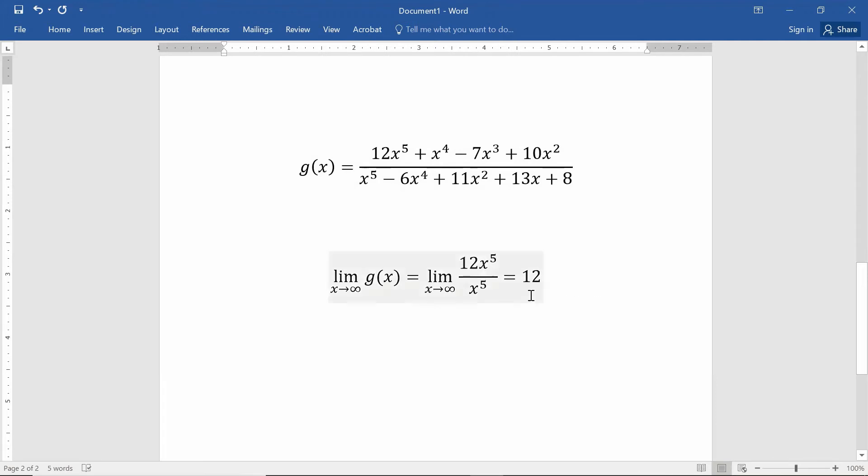By the way, notice that here I'm getting a positive 12, because if you think about plugging in big numbers into x to the fifth and x to the fifth, they're going to be the same, they're going to be positive. So this is going to be a positive 12 times a really big positive number, really big positive number on the bottom. So the positive numbers are going to cancel each other out. So you get a 12.